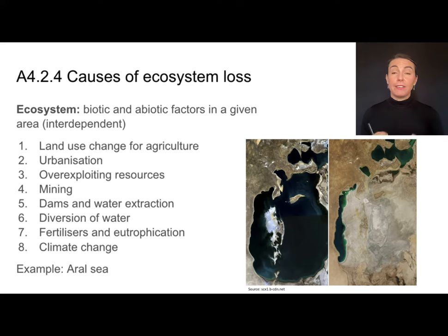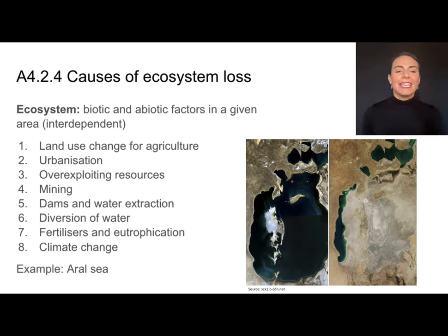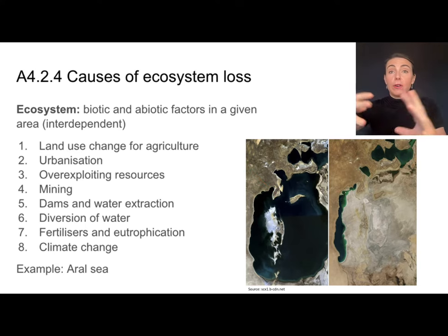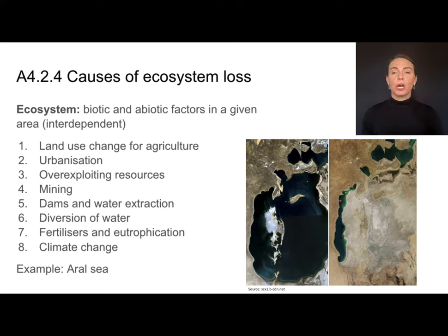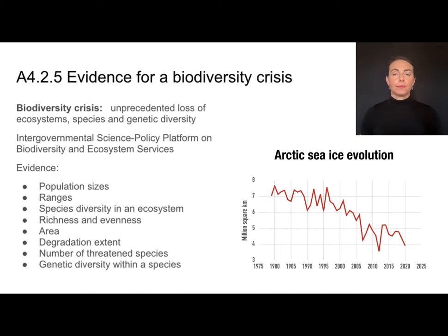A good example of ecosystem loss is the Aral Sea. This is what it looked like before — a body of water fed by two rivers. Those rivers were diverted for irrigation and farmland creation, which is great if you're a farmer, but bad for organisms living in that sea. As you can see from this picture, that sea is no longer able to support the same kind of life it once did.